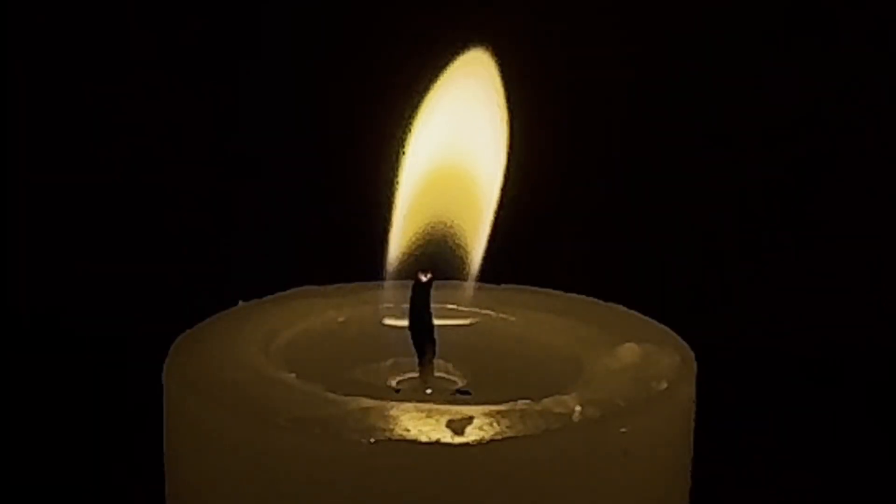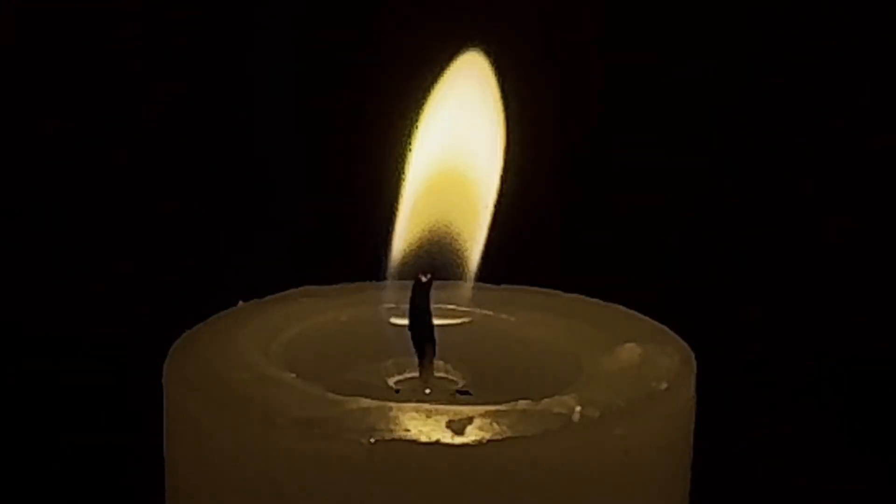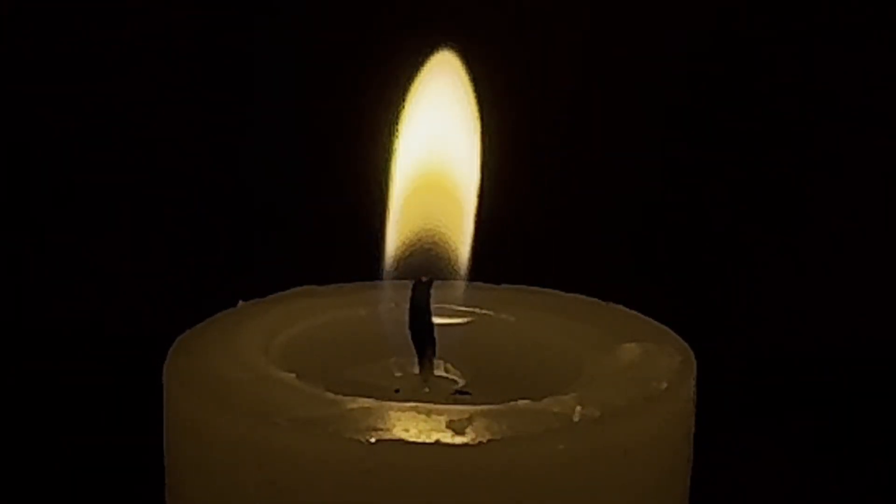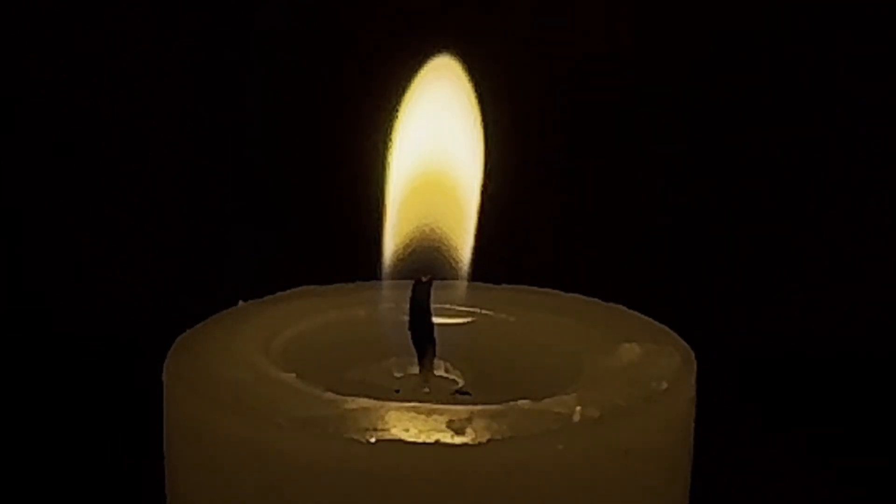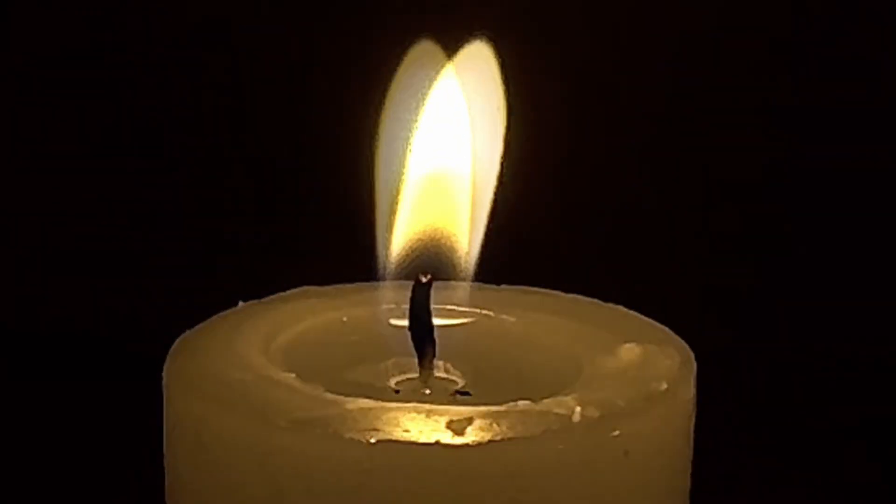With these observations in mind, let's try to understand the structure of a flame. A flame is the visible and gaseous part of the fire where vaporized wax burns to produce heat and light, and remember, also carbon dioxide and water. Now let's take a closer look.